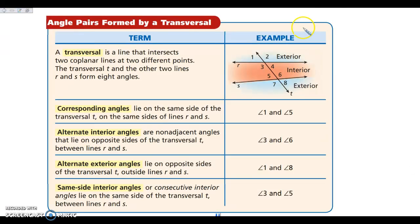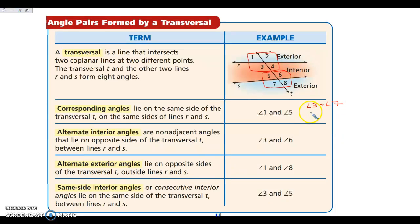When a transversal hits each of the two lines, it creates a group of four angles at each intersection. Corresponding angles lie in the same position at each intersection. Angle one is above and to the left, and angle five is also above and to the left — those are corresponding. Other pairs: angles 3 and 7, angles 4 and 8, and angles 2 and 6. So pairs 1&5, 2&6, 3&7, and 4&8 are all corresponding angles.